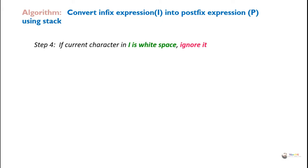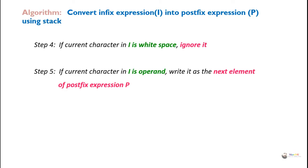Step 4: If the current character in i is whitespace, ignore it. Step 5: If the current character in i is an operand, write it as the next element of postfix expression p. Whenever we get an operand, it is written directly into the postfix expression.